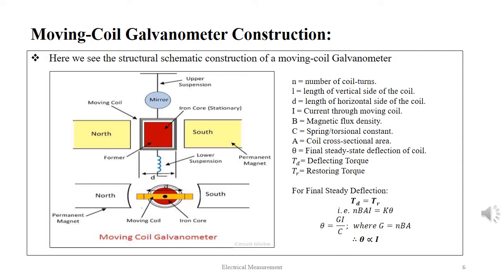For final steady state deflection, Td should equal Tr, that is NBAI equals K·theta. Thus theta is proportional to I.